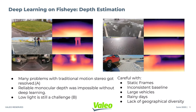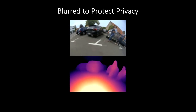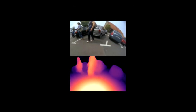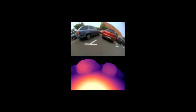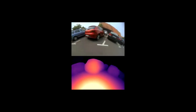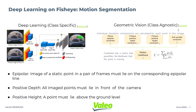Here is a sample output of our network on raw fisheye data. For motion segmentation, we have tried two approaches: one is a deep learning-based network that makes use of deformable convolutions, and another is a classical approach.